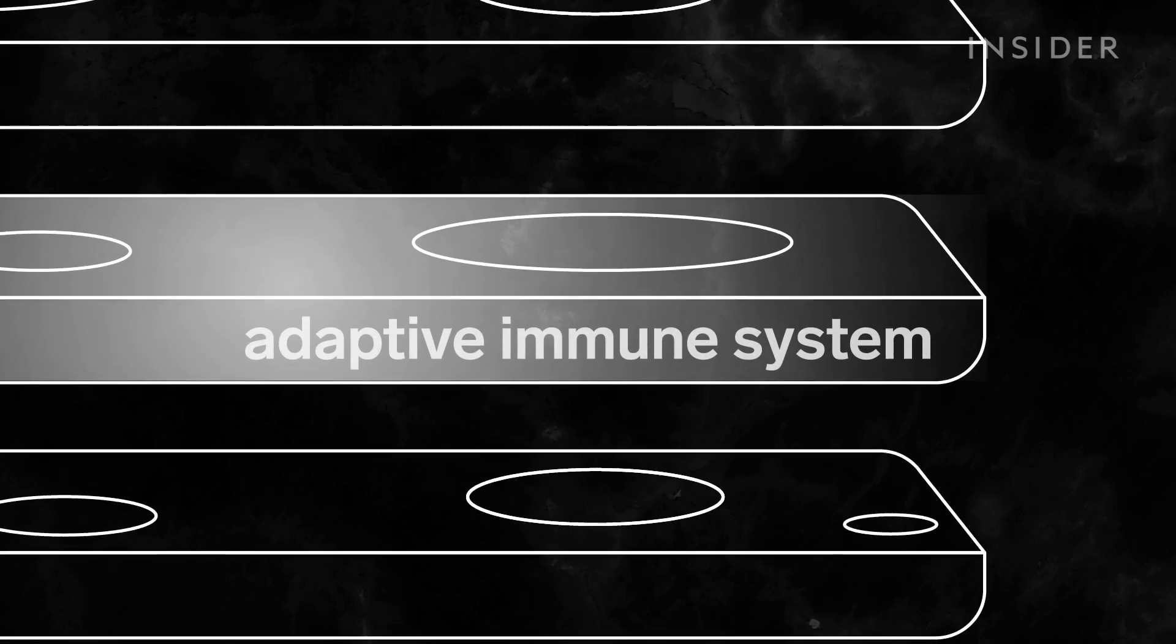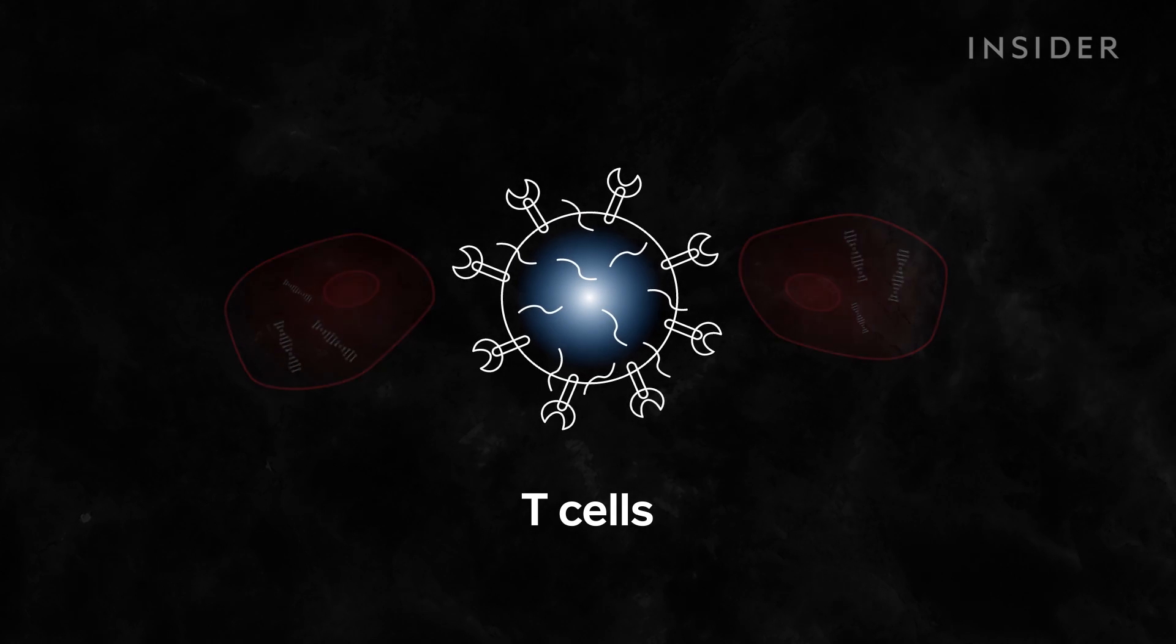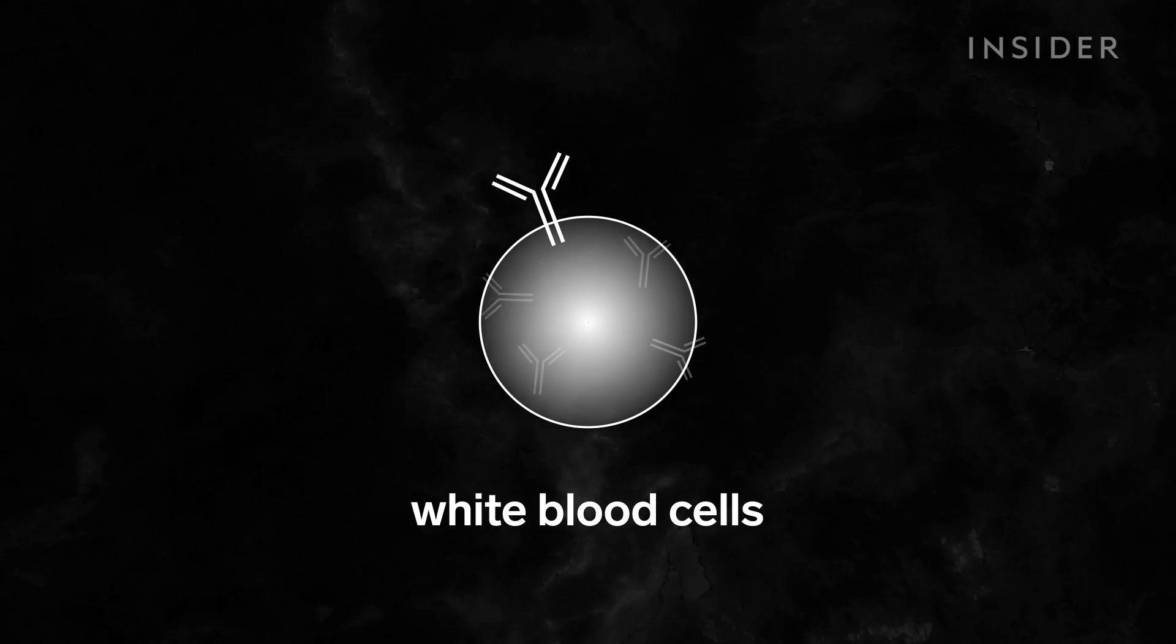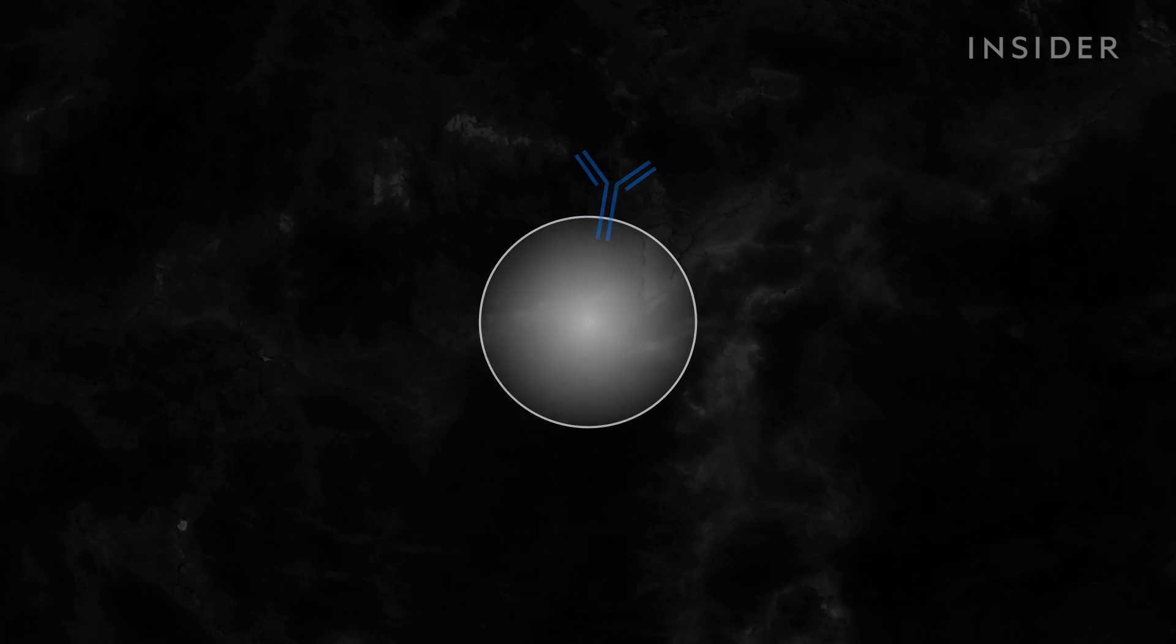If that doesn't work, the adaptive immune system kicks in. Your T cells suss out and kill already infected cells to stop them from making more new virus, while your white blood cells pump out antibodies specifically tailored to fight this new pathogen. But because the body has never seen this virus before, it can take weeks to produce the right ones.